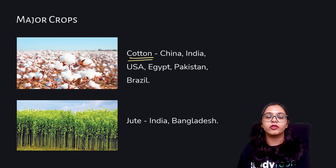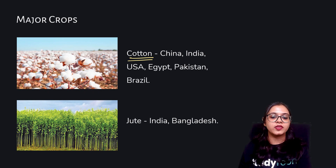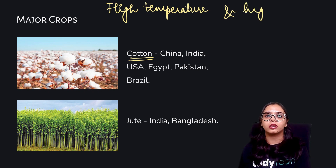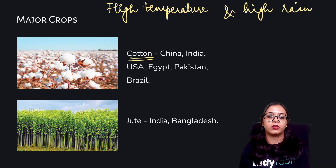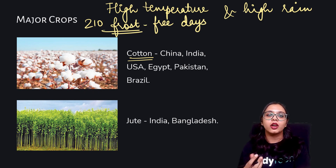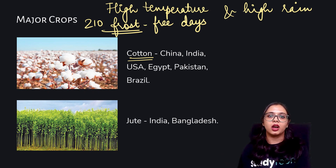Next, we'll be talking about cotton. Cotton is often grown in plantations — large expanses of land where a huge amount of labor is employed. The leading producers of cotton are China, India, USA, Egypt, Pakistan, and Brazil. Cotton needs high temperature as well as high rainfall. One specific condition required for the growth of cotton is that it needs 210 frost-free days, so there should be no frost. These 210 frost-free days are required for the fluffy cotton balls that can then be taken into bales and used for processing.